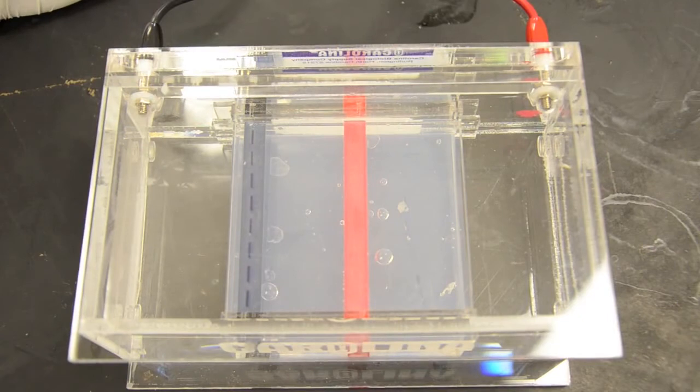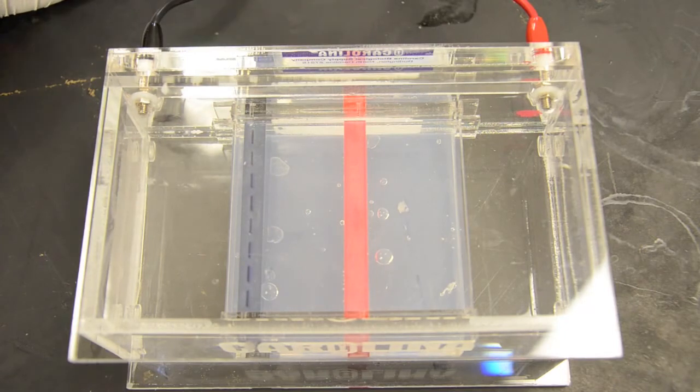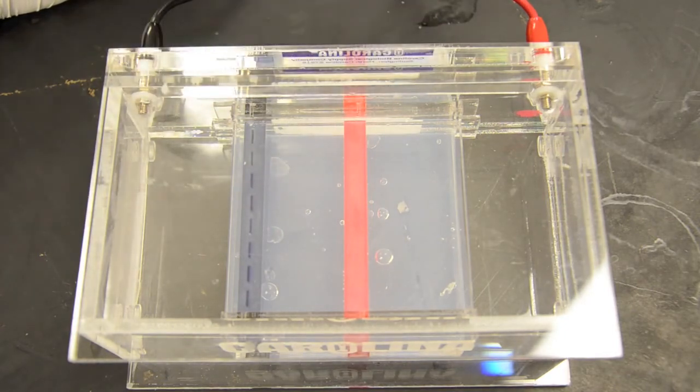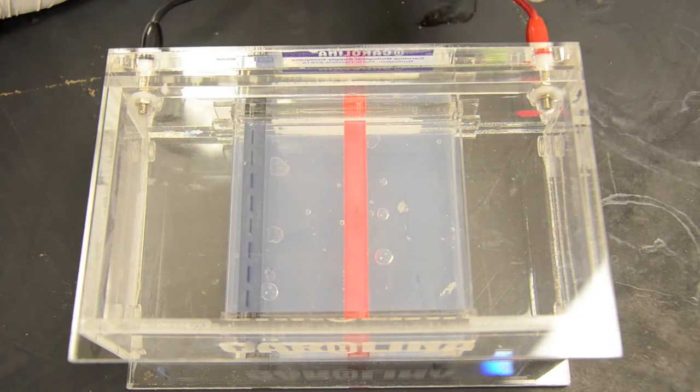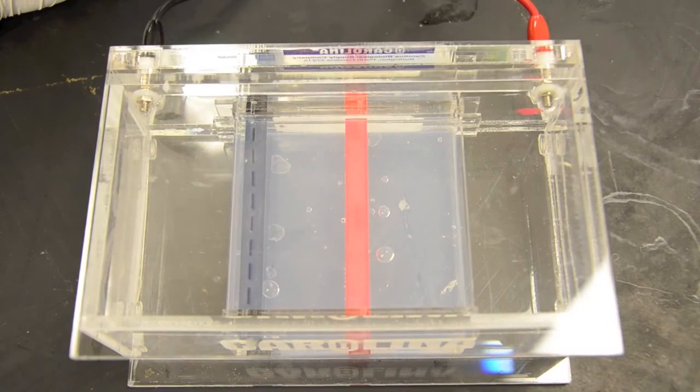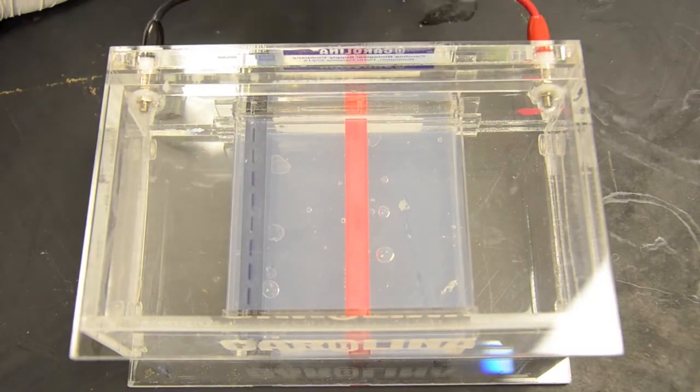Okay, so we have the current flowing going from a negative charge to a positive charge. Now DNA is negatively charged so in order to get the DNA to actually run down the well to where we can get an accurate reading we're going to need it to go down to the positive charge and that's exactly what you're about to see here, is the DNA going from the negative to the positive charge.